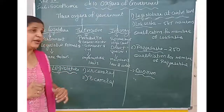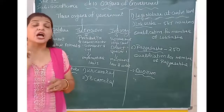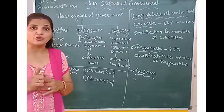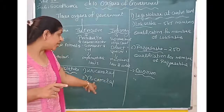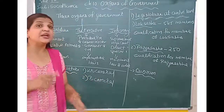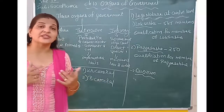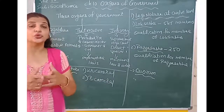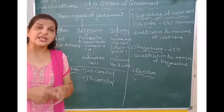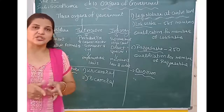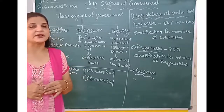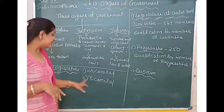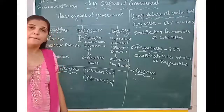There are two types: Unicameral and Bicameral. A legislature that has one house is known as Unicameral, and the legislature that has two houses is known as Bicameral.